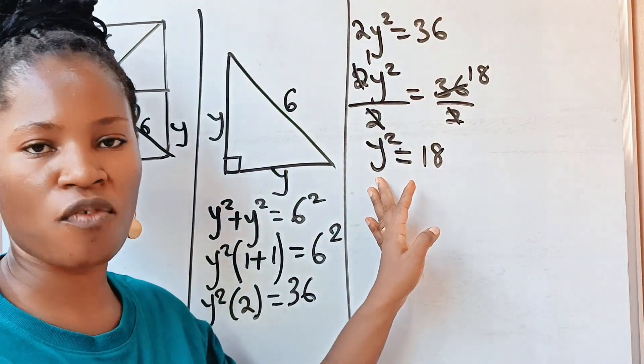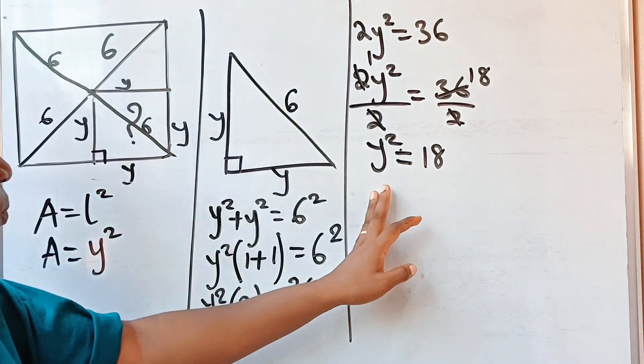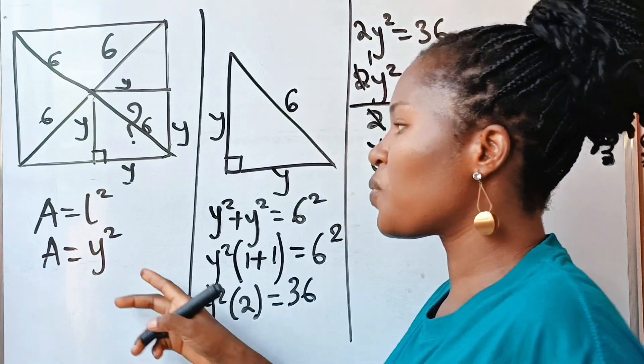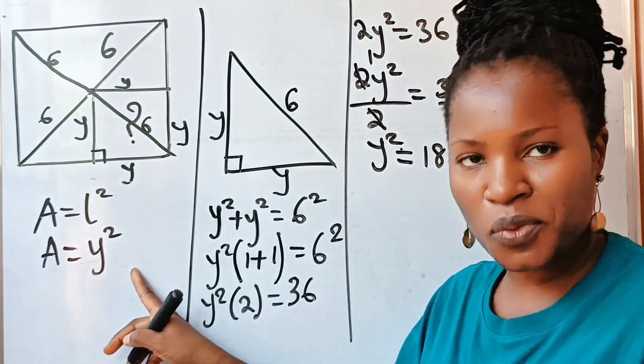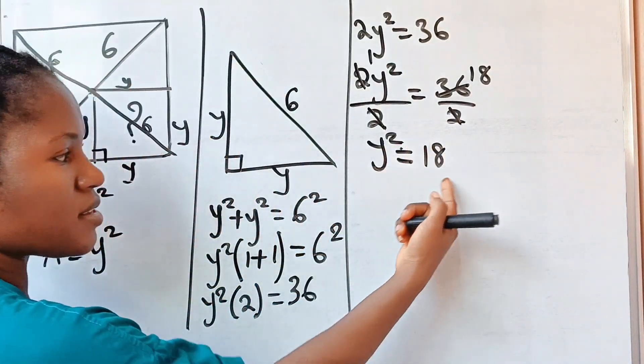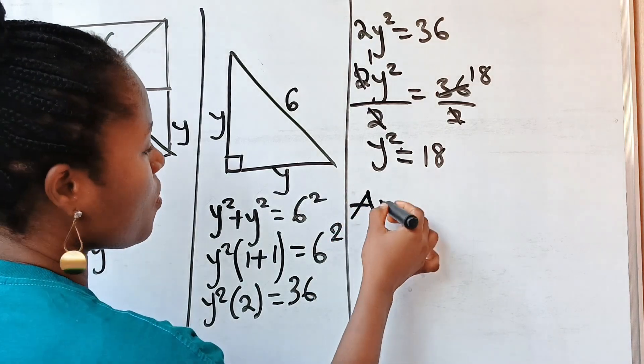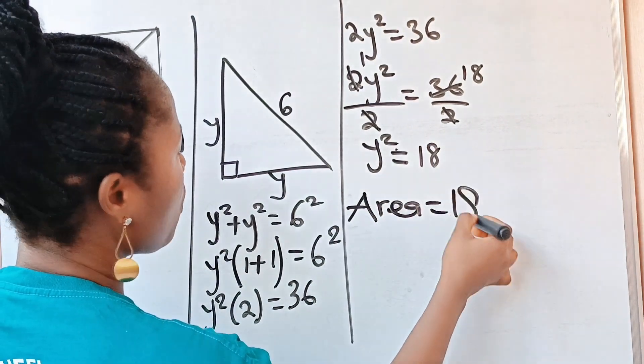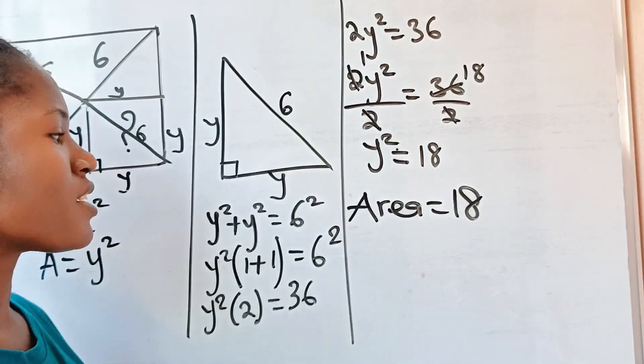Now we can go ahead and get the value of y, but let us check for something first. Recall from here, the first equation that we wrote, that our area is equal to y squared. And from what we just solved, our y squared is equal to 18. So you can see that there is nothing left to solve here, so it simply means that the area that we are looking for is equal to 18 units squared.